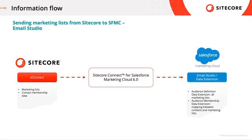XConnect marketing lists and contact membership data is sent to the custom audience definition data extension and the audience membership data extension where marketing lists are created and mapped between contacts and marketing lists. This contact data and marketing lists can then be used when creating email campaigns in your email studio.